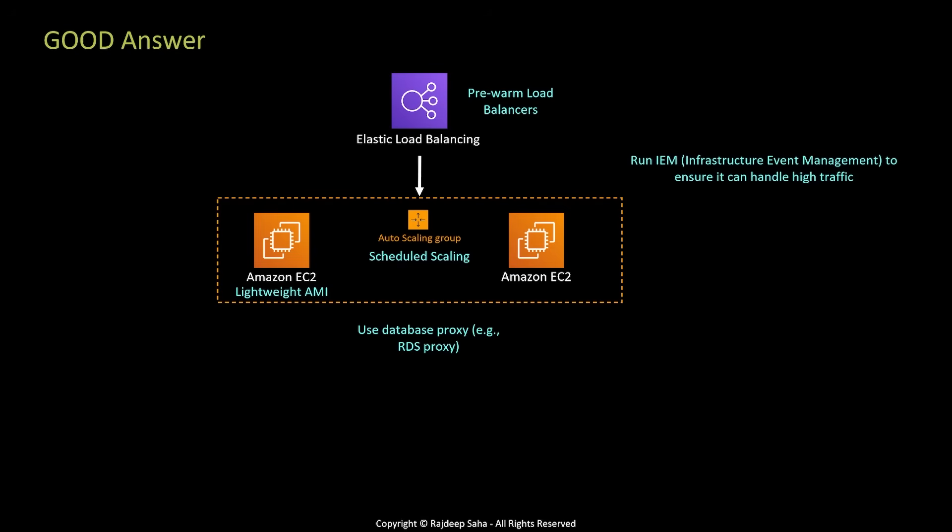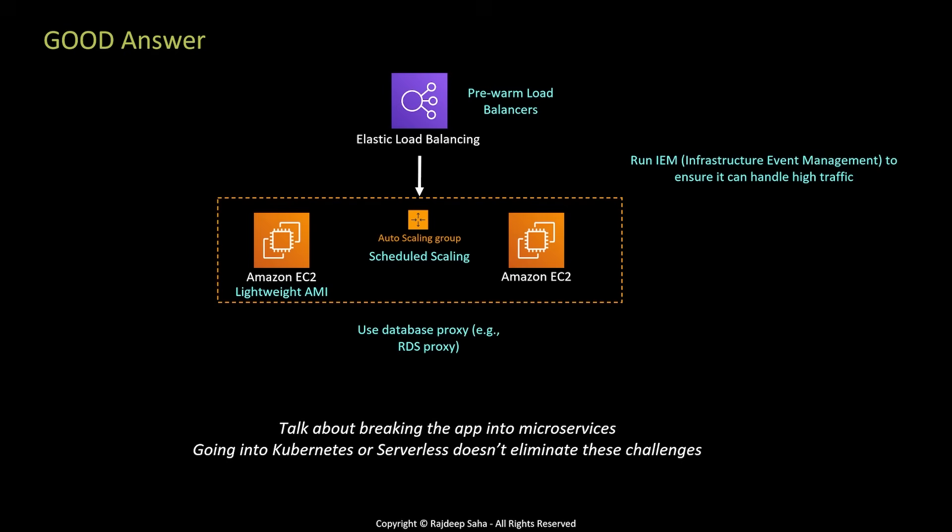On top of this, I will run IEM — Infrastructure Event Management — to ensure the application can handle high traffic. Unless you have worked in a real-world cloud project, you may not know about IEM. It is an event that AWS runs before the big traffic day — it will scale up the load balancer and EC2s, and then pass high traffic to ensure the application can handle it. Beyond this, you can also talk about breaking your applications into microservices, highlighting that one specific API might need to scale up way more than another microservice in the same application.